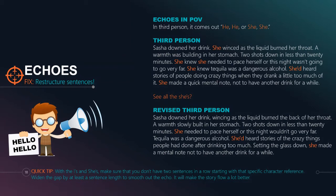How do we revise it? Again, by telling yourself to actively space out the gaps between 'she' and using her name a little more. In the revised version: 'Sasha downed her drink, wincing as the liquid burned the back of her throat. A warmth slowly built in her stomach. Two shots down in less than 20 minutes. She needed to pace herself, or this night wouldn't go very far. Tequila was a dangerous alcohol. She'd heard stories of the crazy things people had done after drinking too much. Setting the glass down, she made a mental note not to have another drink for a while.' We cut six she's down to three. Actively giving yourself that space will trim out that echo.